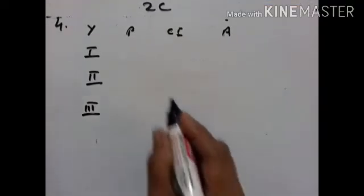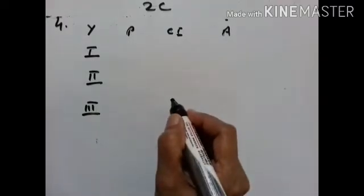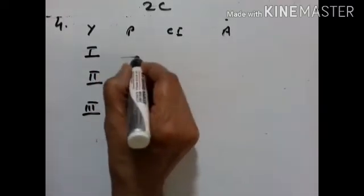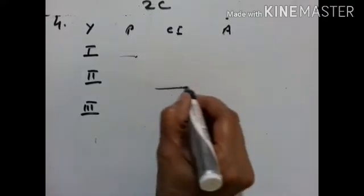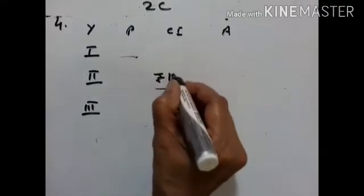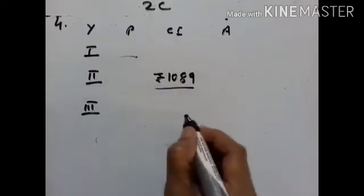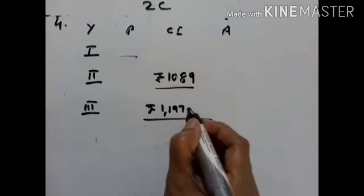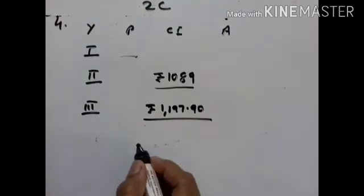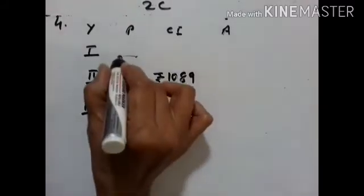Exercise 2c, 4th problem. The compound interest calculated yearly on a certain sum of money — we don't know what that sum is. For the second year it is Rs. 1089, and for the third year it is Rs. 1197.90. Calculate the rate of interest — R is equal to what? — and the sum of money — what is P?